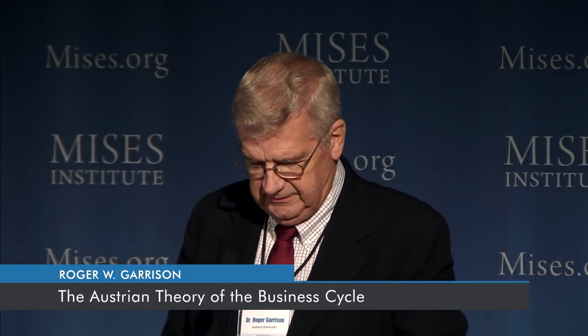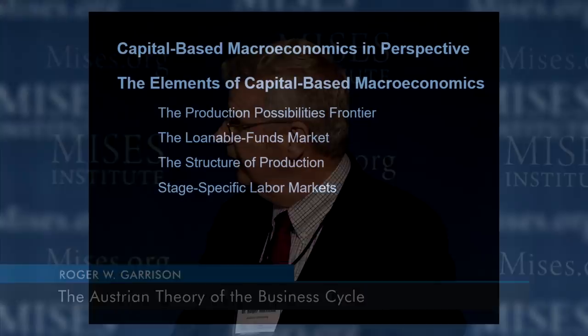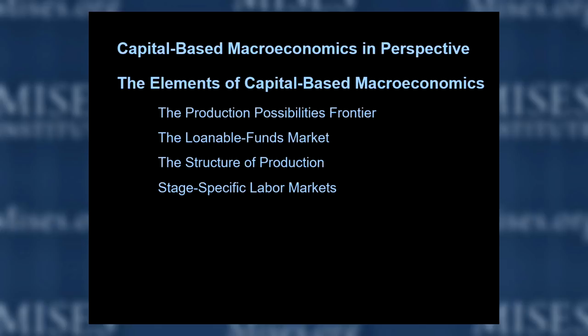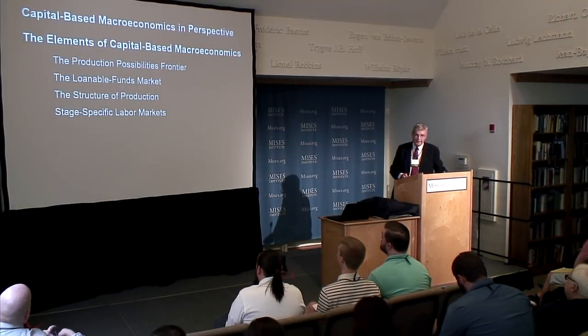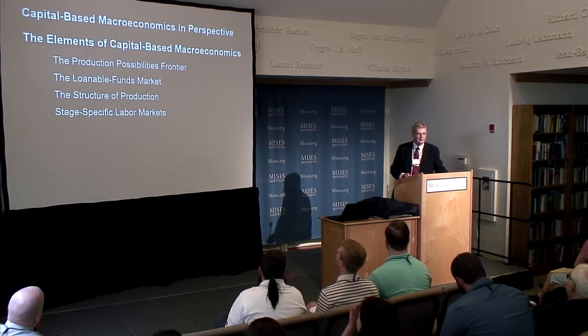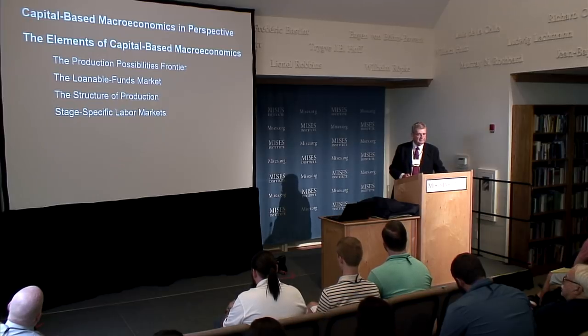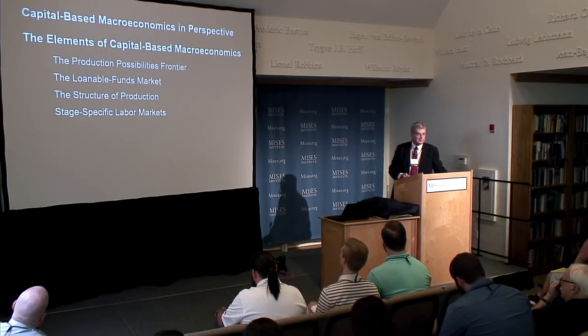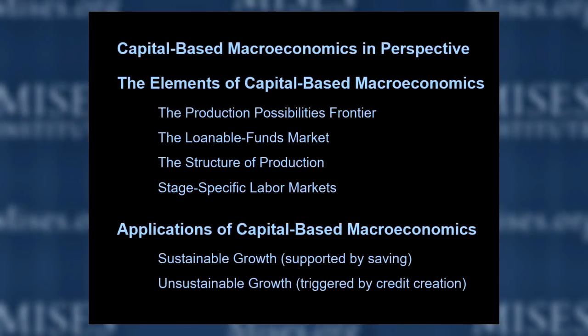We're going to look at sustainable and unsustainable growth. I'll start out with the elements of Austrian economics, which are pretty familiar: the production possibilities frontier, the loanable funds market — that's supply and demand of loans with the interest rate in play — and then the structure of production, which is hardcore Hayek, Menger and Mises. Then there are stage-specific labor markets, and two applications: sustainable growth supported by saving, and unsustainable growth triggered by credit expansion.